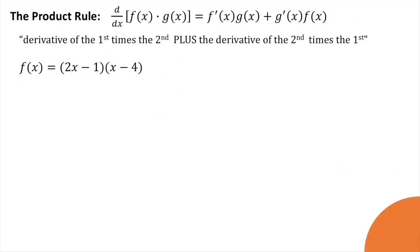Moving on, we'll learn a couple new differentiation rules. First is the product rule. If you take the derivative of two functions that are being multiplied together, you take the derivative of the first and multiply it by the second, and you take the derivative of the second function and multiply it by the first. So: derivative of the first times the second, plus derivative of the second times the first. Let's practice that.